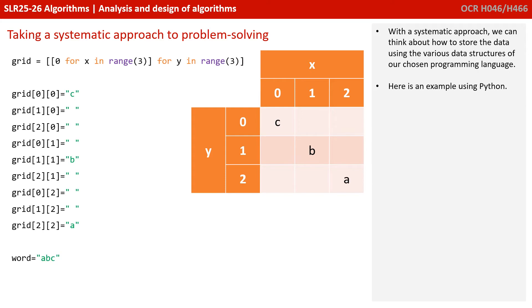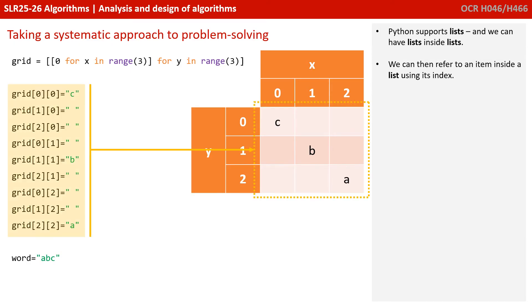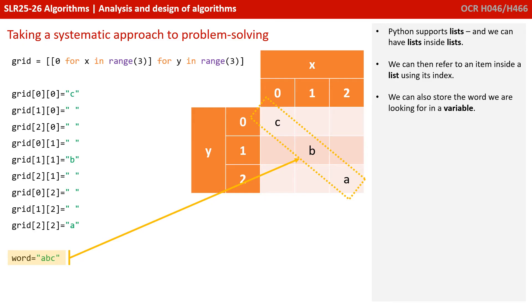Taking a problem decomposition and algorithmic thinking approach, we can think about how to store our data using the data structures provided by our programming language. Here we're showing a Python example. Python supports lists and we can have lists inside lists and then we can refer to a particular item in the list using its number. So it's a good fit for our problem. We can also store the word that we're going to be looking for in a variable.